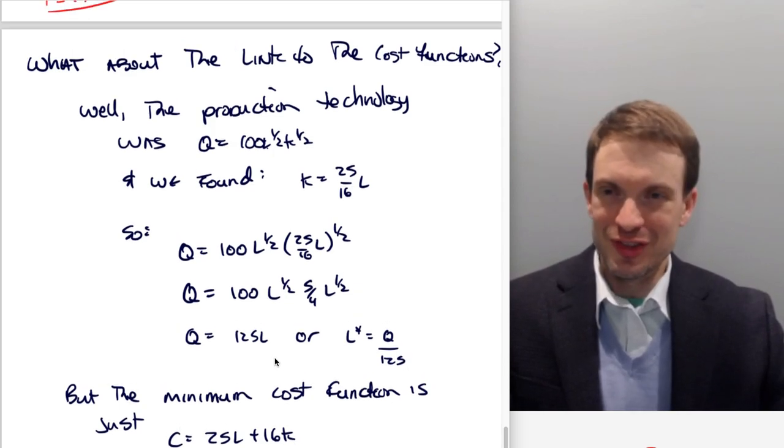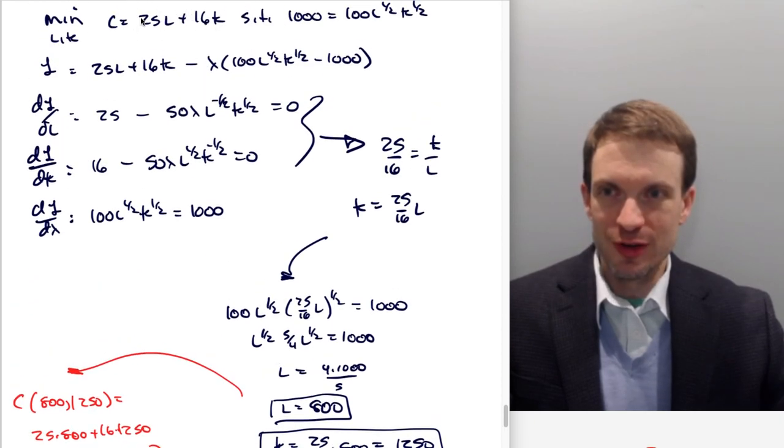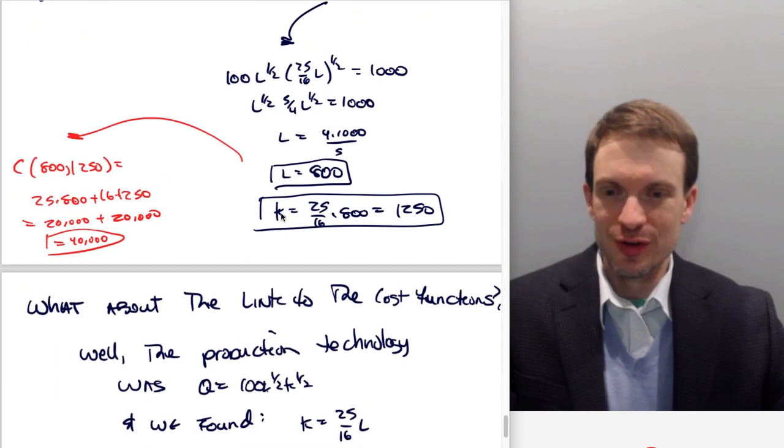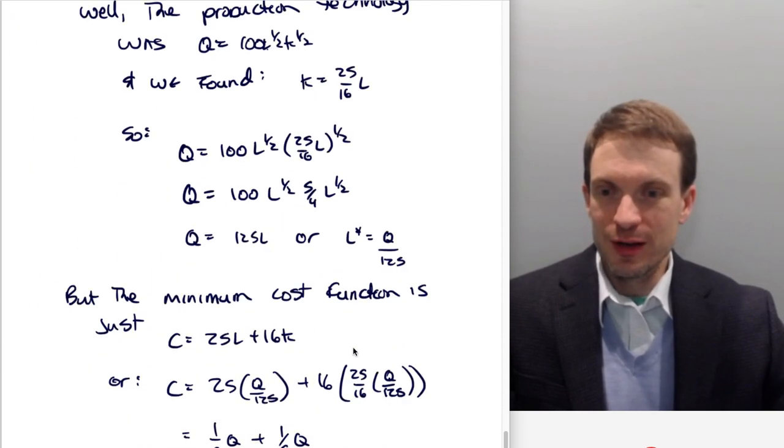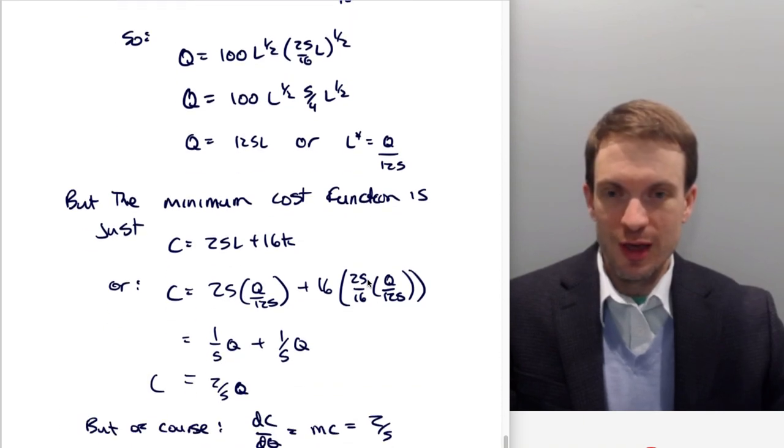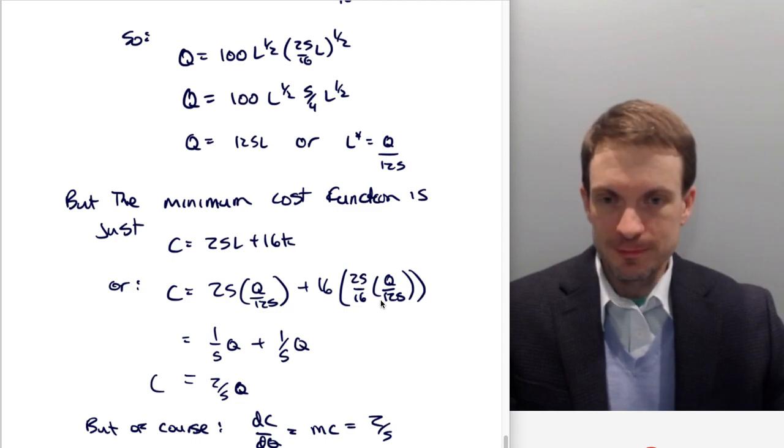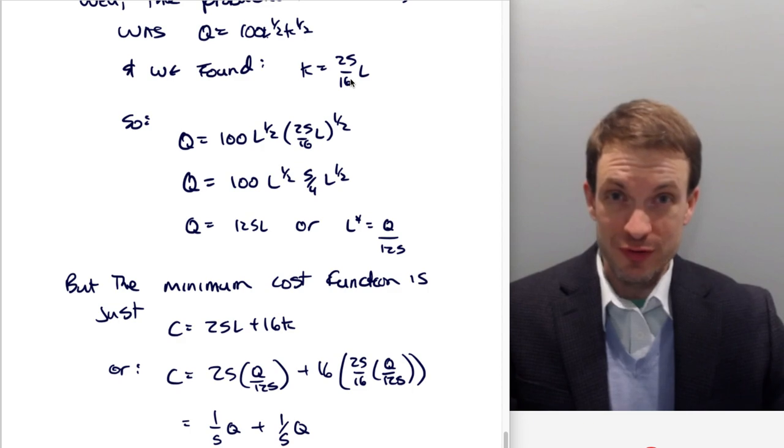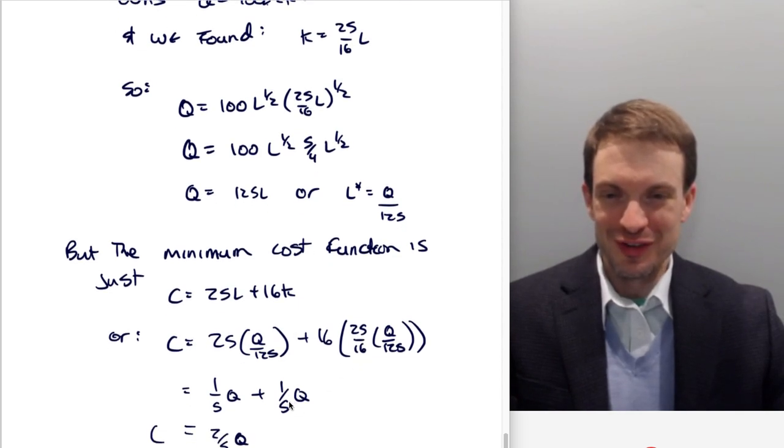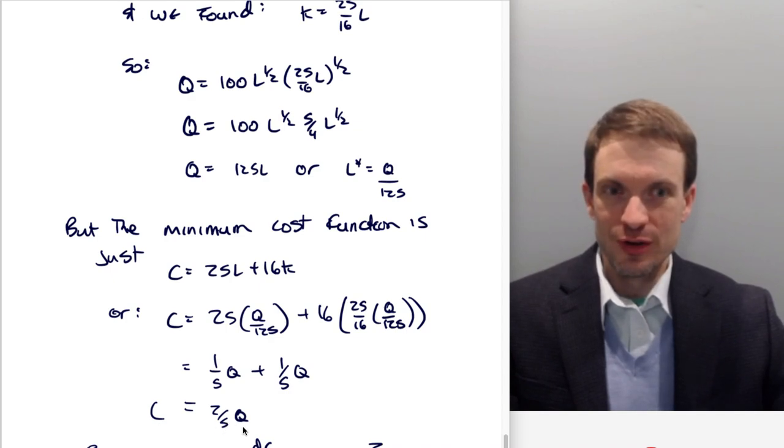This would be my relationship for L, which I'm going to exploit as follows. Remember our cost function is just the expenditure portion, the objective that we were minimizing. It's just 25L plus 16K, but we can get an expression for L involving Q. Why is that useful? You're going to see real quick. So let's plug in this L in terms of Q: 25 Q over 125, that's nice because 25 divided by 125 is one fifth. And then I'm going to plug in my relationship for K in terms of L. So K was 25 over 16 L, and L was Q over 125. That cancels nicely. So costs is two fifths Q. Here's a cost function in terms of output.